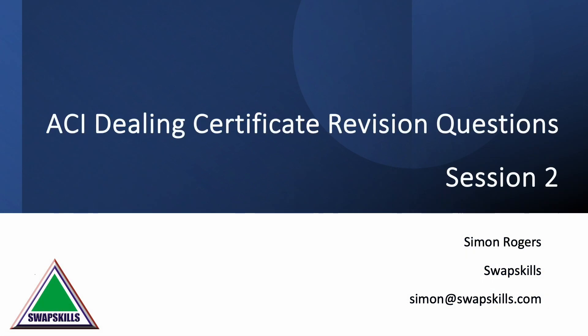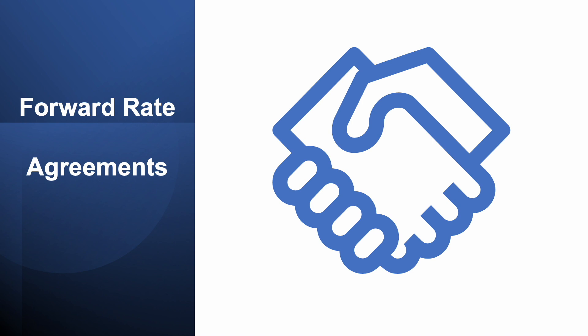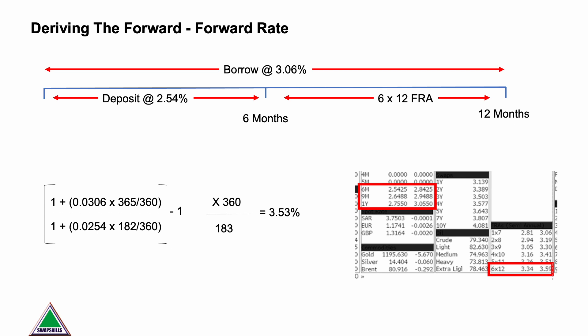I've put together some more review questions, and in this section we're going to cover forward rate agreements, options, and swaps. We're going to look at the relationship of a forward curve to a swap curve and understand where swap rates actually come from. We'll kick off looking at FRAs and forward forwards, because this almost always comes up in the ACI exams. Remember you've got a formula sheet, so make sure you know how it works and that you're up to speed with the calculations.